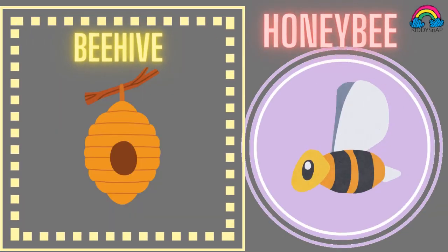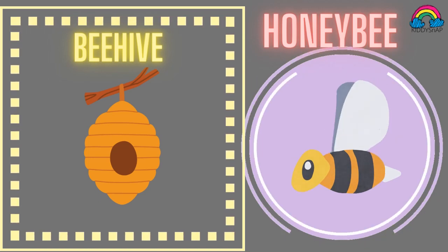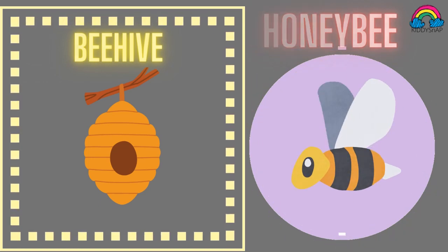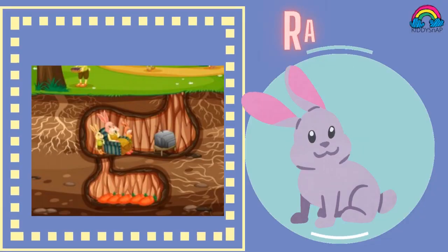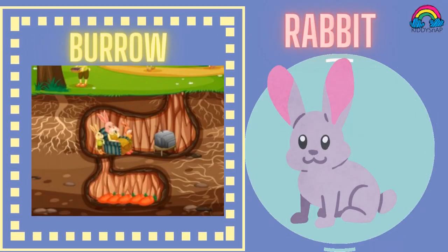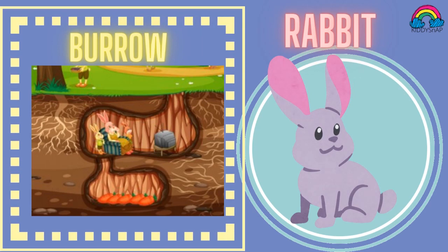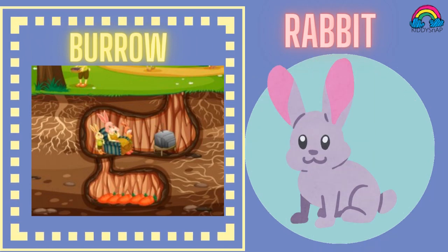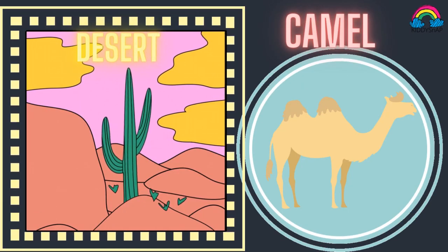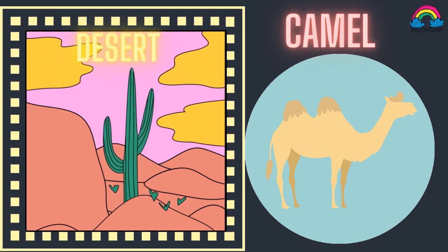Honey bee makes its own beehive and lives in it — the house of a honey bee is called a beehive. Rabbit makes its own burrow and lives in it — the rabbit's house is called a burrow. Camel lives in the desert — the house of a camel is the desert.